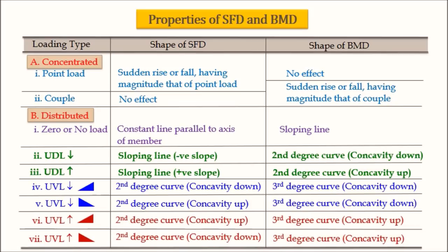Two important points to recall: first, the point of zero shear — whenever shear force is zero, the bending moment has a peak value because dM/dx equals V, and when V becomes zero, the bending moment function has a peak value. Second, the point of contraflexure — whenever bending moment is zero and changes its sign from sagging to hogging or vice versa, that point is called the point of contraflexure.